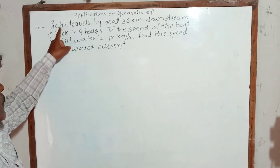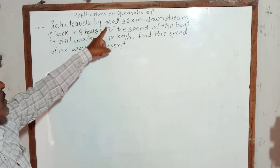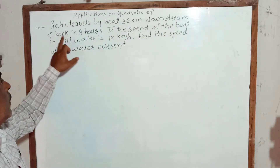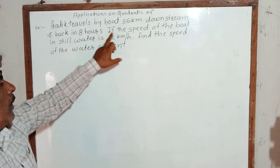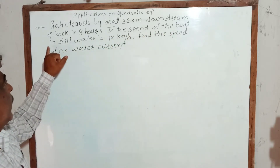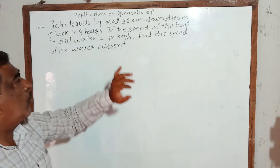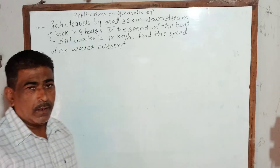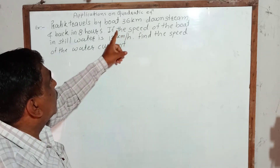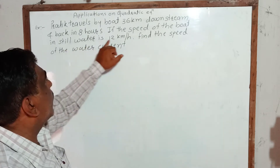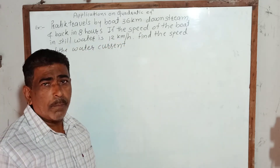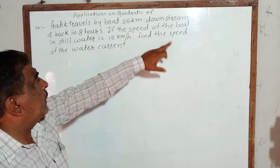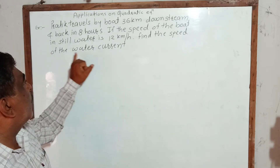The second example: Pratik travels by boat 36 km downstream and back in 8 hours. If the speed of the boat in still water is 12 km per hour, find the speed of the water current. The speed of the boat in still water is given as 12 km per hour, and the question is to find the speed of the water current.